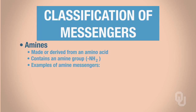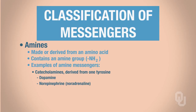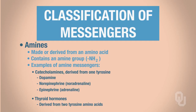Here are some examples of amine messengers, and we're going to be spending quite a bit of time this semester discussing them. First, we have the catecholamines — a group of amines that includes dopamine, norepinephrine (also called noradrenaline), and epinephrine (also called adrenaline); we'll be using the term epinephrine in this class. Thyroid hormones are also types of amine messengers; however, they are made from two tyrosine amino acids, whereas catecholamines are derived from only one tyrosine.